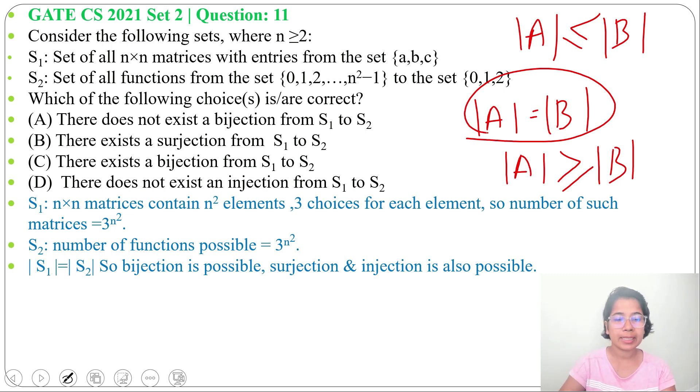As here both cardinalities are the same, bijection is possible plus one-to-one and onto are possible, or you can say surjection and injection are also possible.